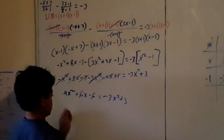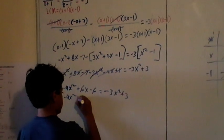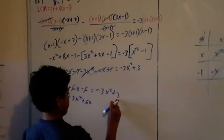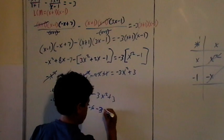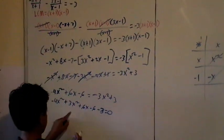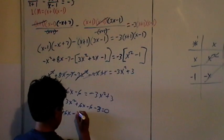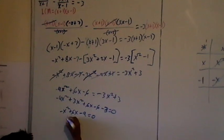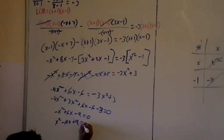Now collect these terms to the side, so it becomes 4x squared, and you move this term to the left, it becomes plus 3x squared plus 6x. When you move that to the left, it becomes a negative. Minus 6 minus 3 equals 0. And just tidy up: minus x squared plus 6x minus 9 equals 0. Now multiply it by negative 1 for the quadratic, which is x squared minus 6x plus 9 equals 0.